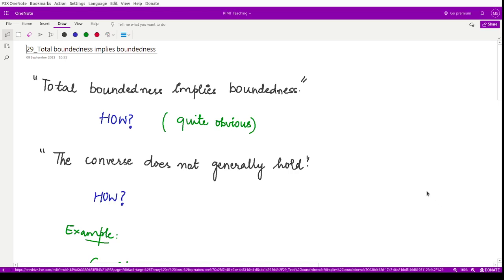Hello everyone, welcome to this video. In the previous videos, we have learned about epsilon nets and total boundedness. Here we shall discuss how total boundedness implies boundedness. This is quite obvious if you look at the definition.